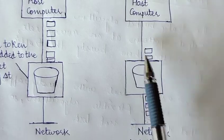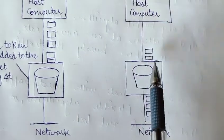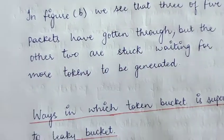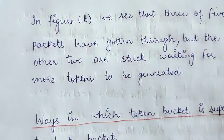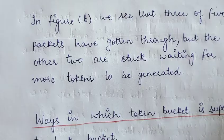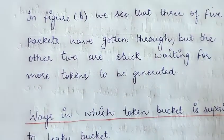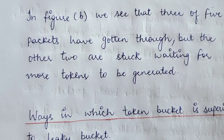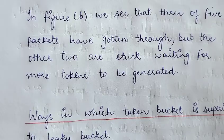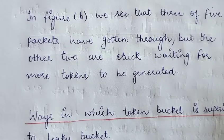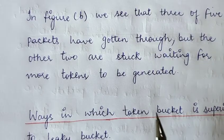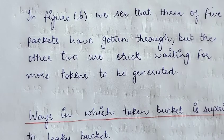Three packets got through out of five, and two are left. The remaining two packets are stuck waiting for more tokens to be generated. Those two packets got stuck because there were only three tokens, so only three packets got through the bucket. The two remaining packets wait for more tokens to be generated so they can capture tokens and be transmitted.